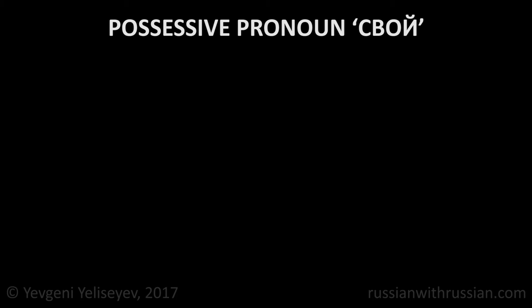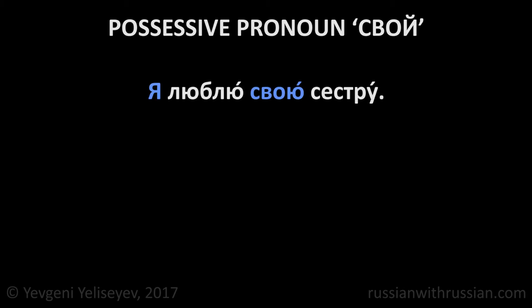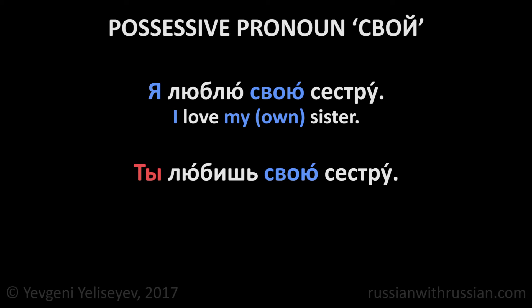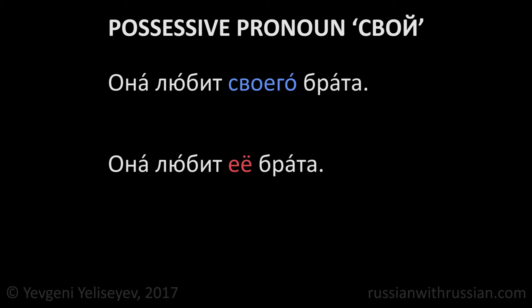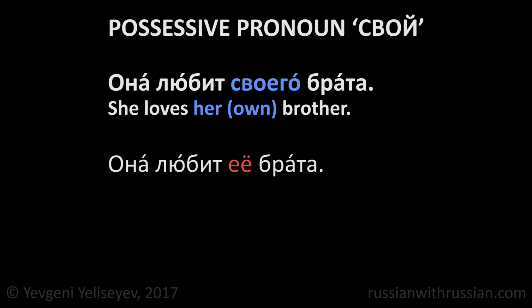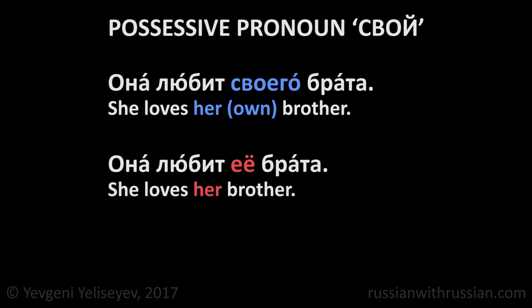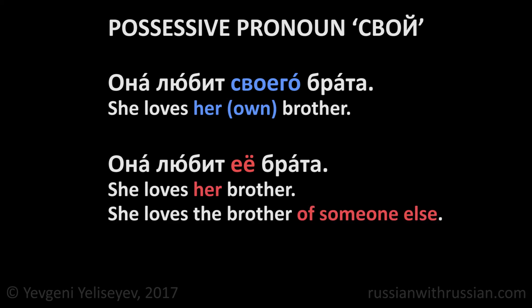In Russian, there is also a possessive pronoun свой. It's used when we talk about objects that belong to the person performing the action. For example: Я люблю свою сестру – I love my own sister (this sister belongs to me). Ты любишь свою сестру – you love your own sister. Compare: Она любит своего брата – she loves her own brother. Она любит её брата – she loves her brother (someone else's brother).